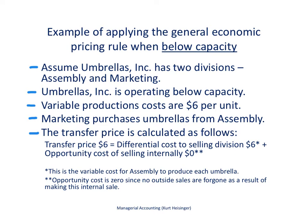Here is an example of applying the general economic pricing rule when the selling division is below capacity. On the next slide we'll talk about what happens when the selling division is at capacity, but right now we'll talk about when the selling division is below capacity. In this example, let's assume that we are Umbrellas Inc., and we have two divisions: the assembly division, which is basically the production department, and the marketing division.